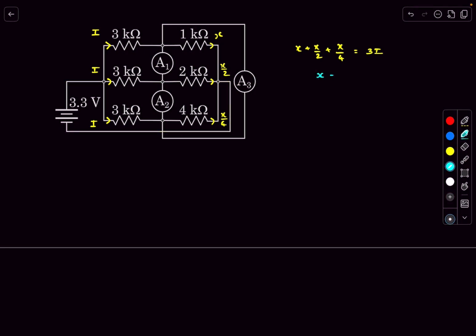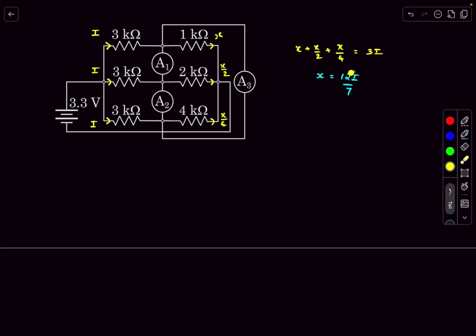So as there is an i by 7 factor over here, what we can do is scale up all these currents by a factor of 7. So let's make all these as 7i.